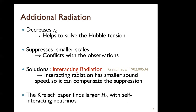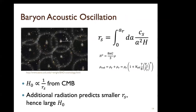The BAO scale is measured assuming Lambda CDM. The main assumption is that the energy density in the early universe is just from the standard model. Any new physics — like changing N_eff — will alter our assumption about the BAO scale and therefore the inferred Hubble constant.